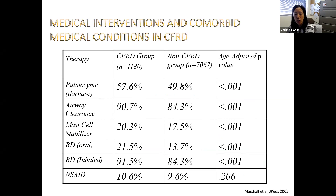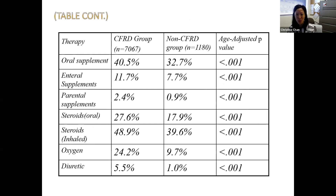Other data looking at medical interventions — from the U.S. patient registry — have shown that diabetes is associated with an increased need for medical interventions. These data compare over 1,000 patients with diabetes versus patients without, and patients with diabetes have an increased need for therapies: pulmozyme, airway clearance, bronchodilators, oral supplements, enteral supplementation, steroids, oxygen, and diuretics.